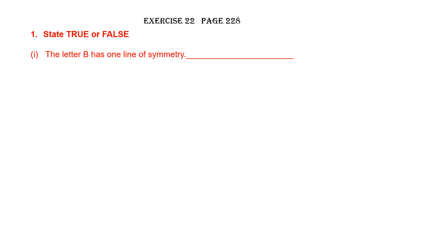First sentence: the letter B has one line of symmetry. We need to say whether this is true or false. Let's have a look at the letter B. We can only draw one line of symmetry, so the first statement — the letter B has one line of symmetry — is true.